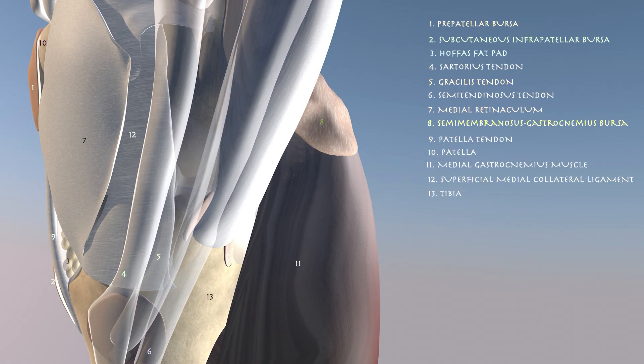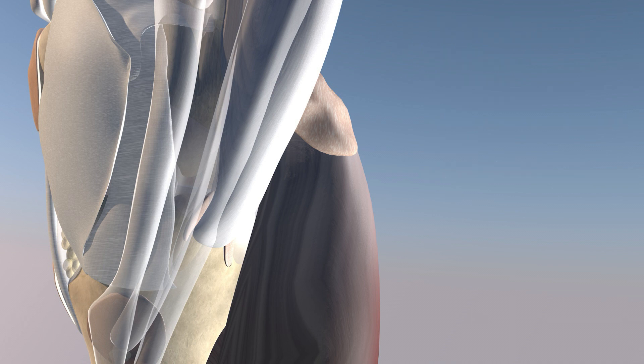Here on the medial aspect of the knee we can see the pes tendons inserting on the proximal medial tibia with the pes bursa underneath that.